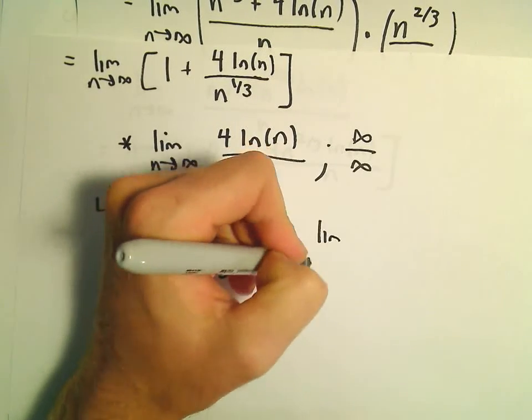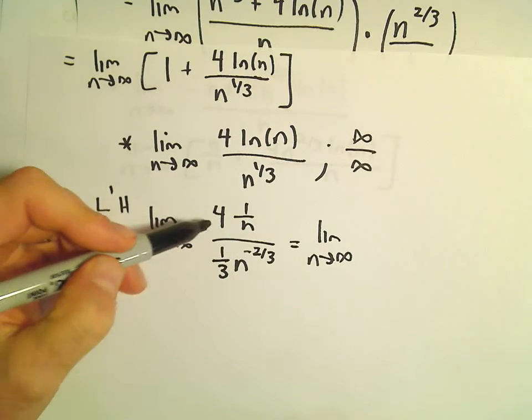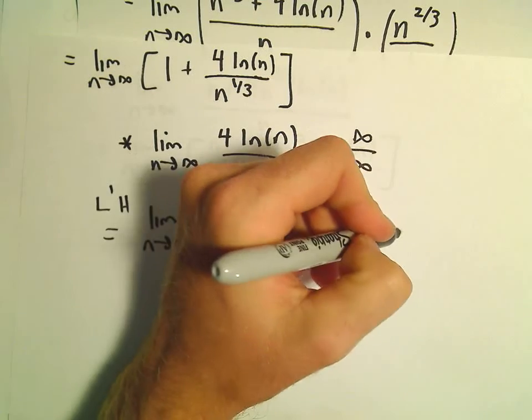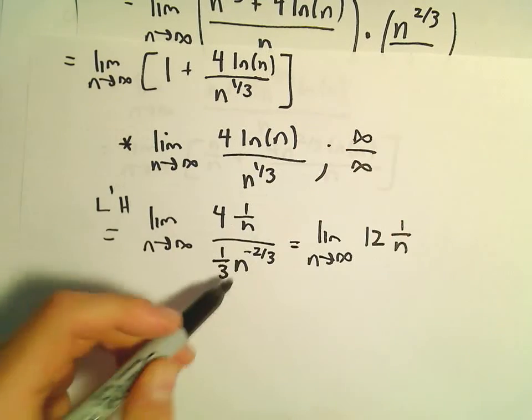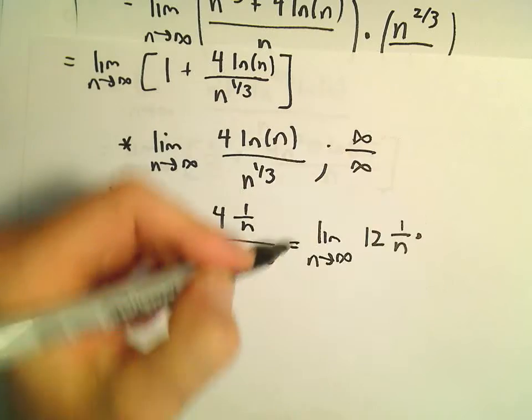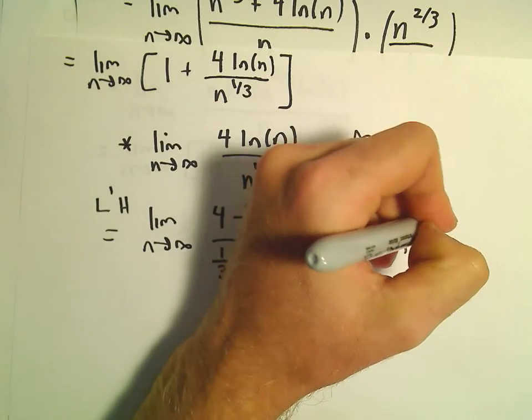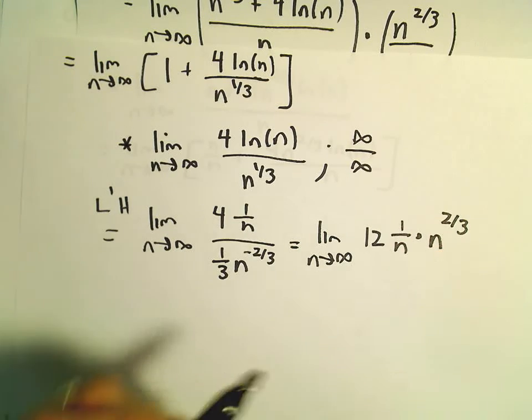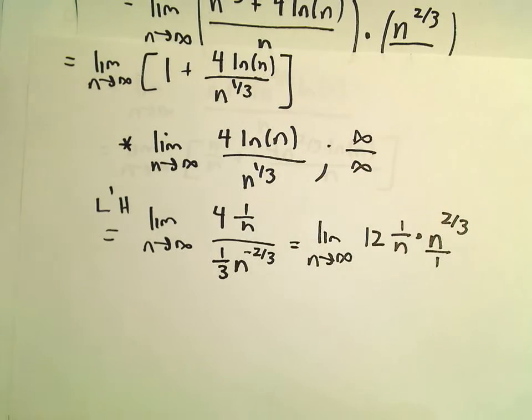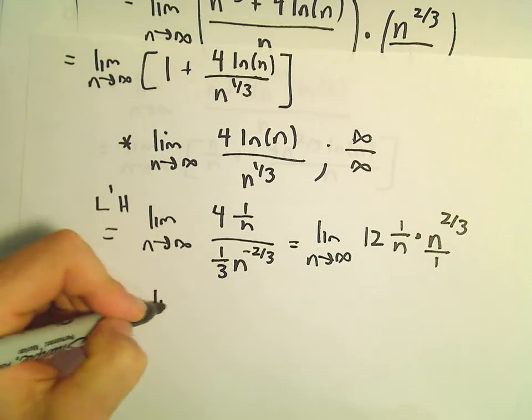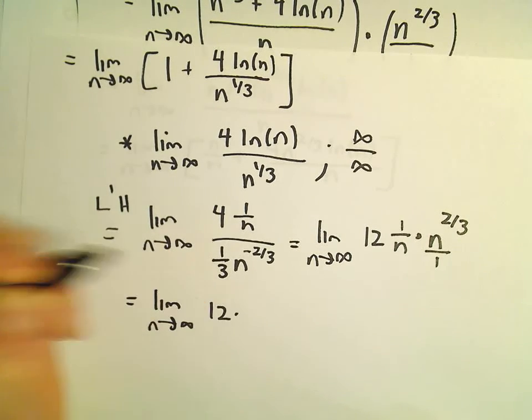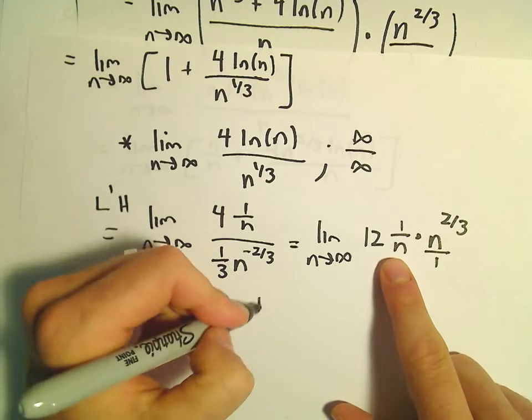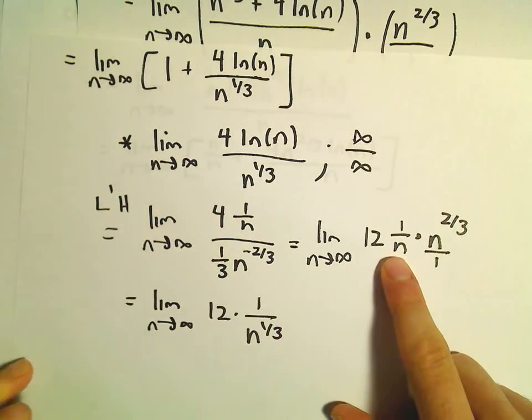Well, we can do a little bit of algebra here to clean this up. So let's see. We have 4 divided by 1/3. That's 4 times 3 or 12. We've got 1 over n. The n to the negative 2/3, we could make that go to the exponent, or go to the numerator. We'll make the exponent positive and have n to the 2/3. So we have the limit as n goes to infinity of 12 times n to the 2/3 over n to the 1st. That's going to be 1 over n to the 1/3 power.